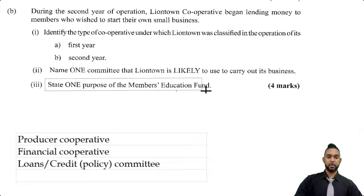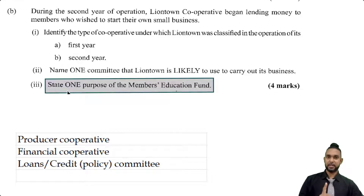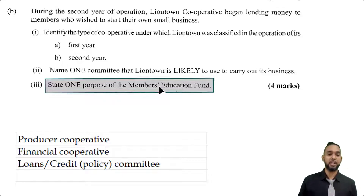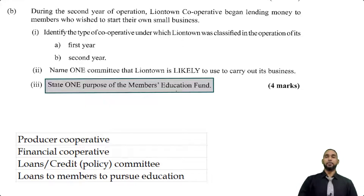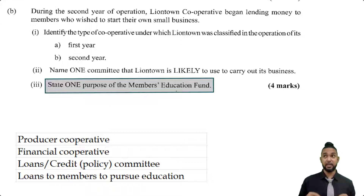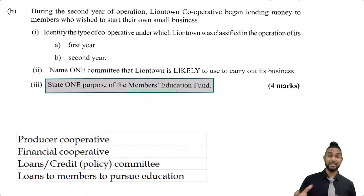The last part of part B says: state one purpose of the members education fund. The fund is named members education, so it's a fund to pay for members' education. My answer is loans to members to pursue education — for example, members might want to attend a university or institution, pay for seminars to train members, or improve technology available to members. Whatever answer you put, tailor it to say it's going to be used for members' education.